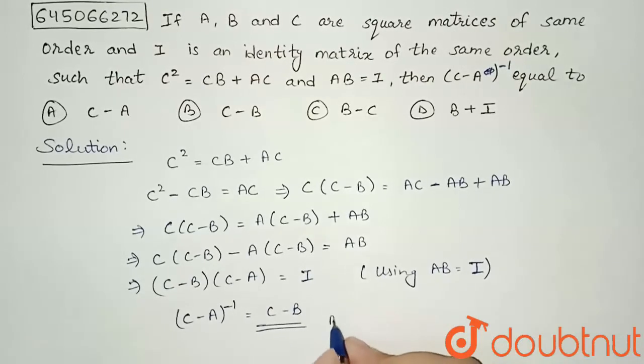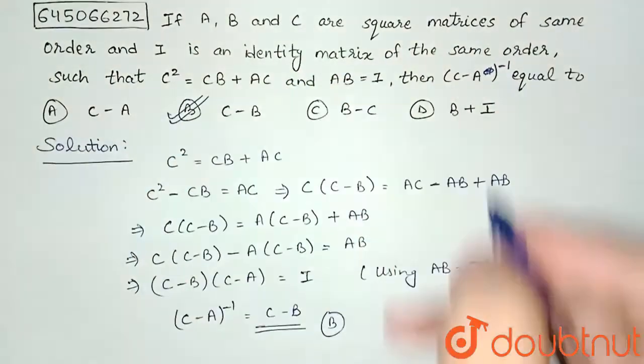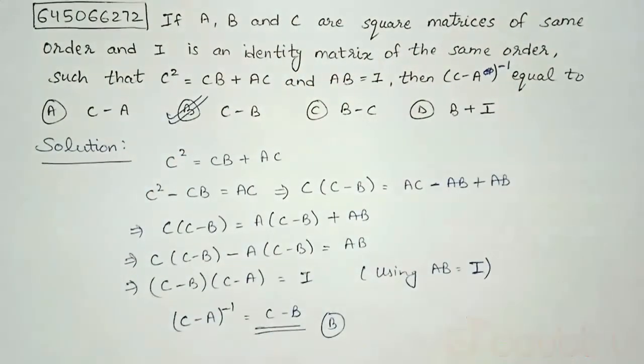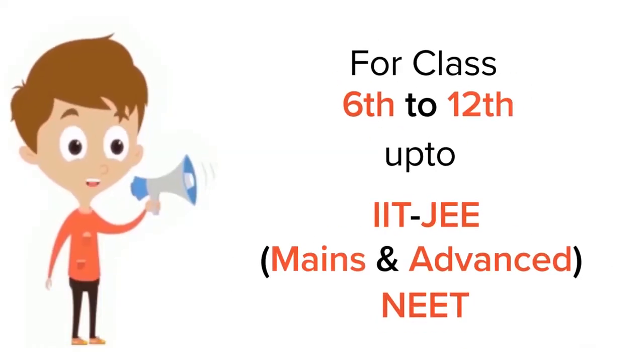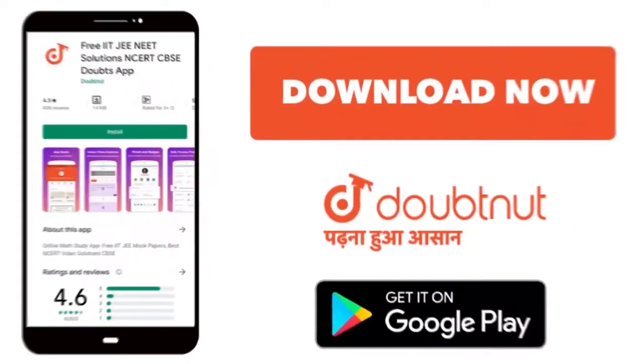So (C - A)⁻¹ = C - B, which is option B. So option B will be our correct answer. Thank you. For class 6 to 12, IIT, JEE, and NEET level, trusted by more than 5 crore students, download Doubtnet today.